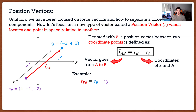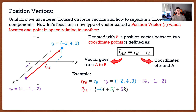If I want position vector PB, I take the coordinate points of where I end up — the blue point — and subtract where I started — the purple point. So I take the coordinates of the blue point and subtract the coordinates of the purple point, and I get the following vector. The first component is negative 6i: I took negative 2 and subtracted 4. The second component is 5j: I took 4 and subtracted negative 1. And for the k component, I took 3 and subtracted negative 2.